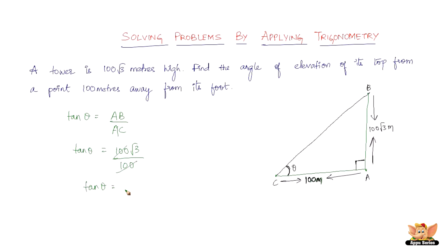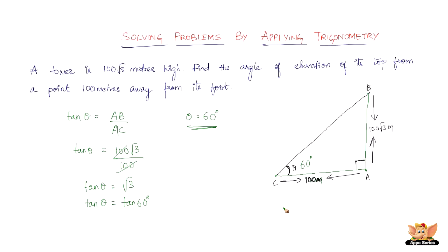The 100s cancel, giving tan θ = √3. We now ask: tan of what angle equals √3? We know tan 60° = √3, so therefore θ = 60°. The angle of elevation of the tower's top from a point 100 meters from its foot is exactly 60 degrees.